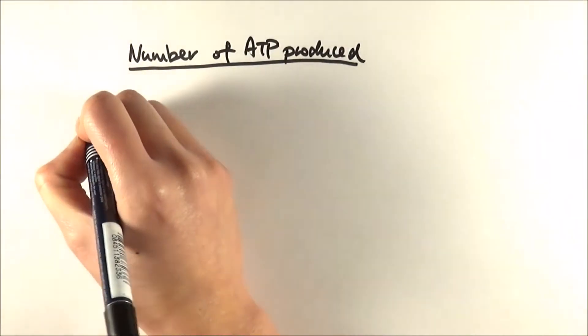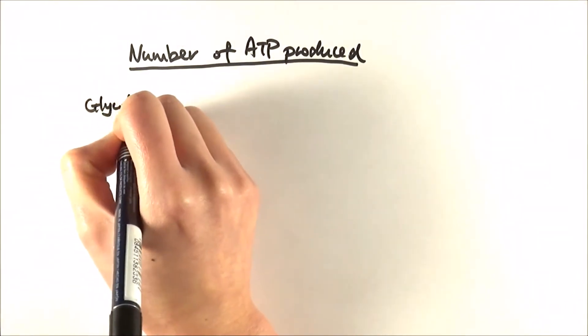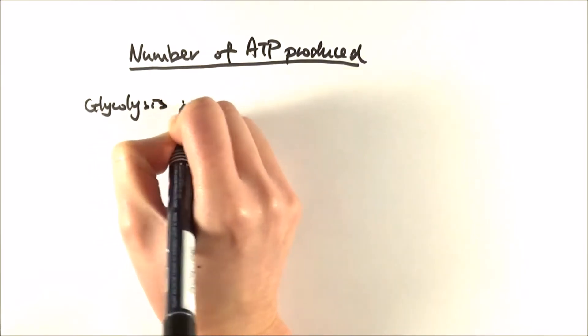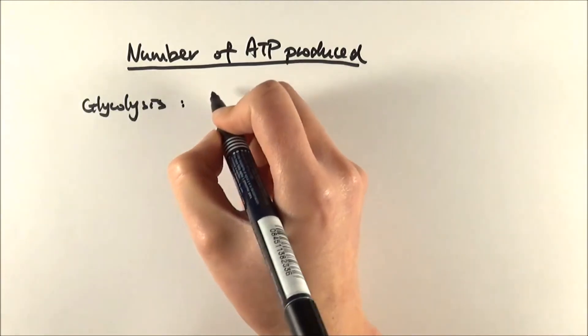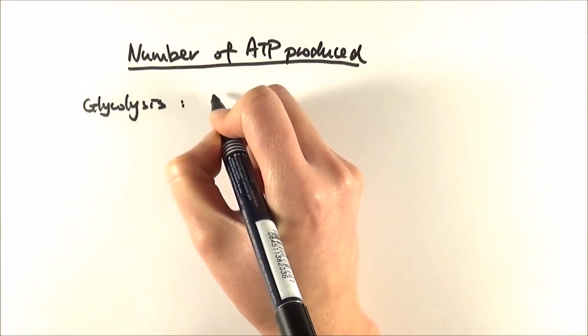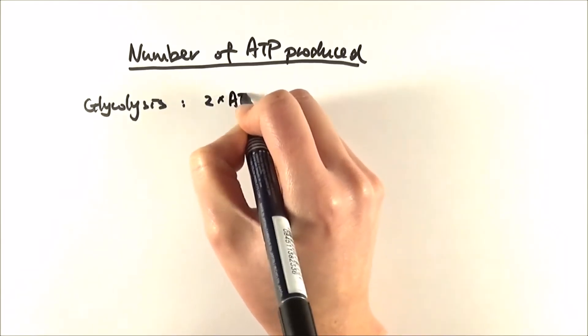So let's start with glycolysis, which is the first stage. In glycolysis, we have made 2 pyruvate, which then goes on to continue with the cycle. We also had a net gain of 2 ATP there, so we can already include that.